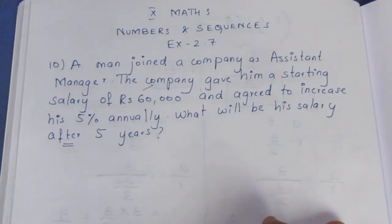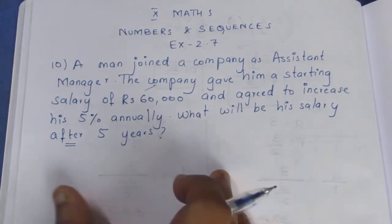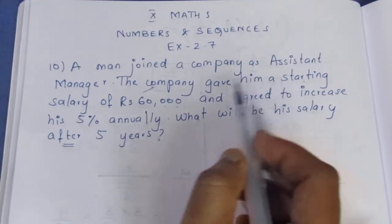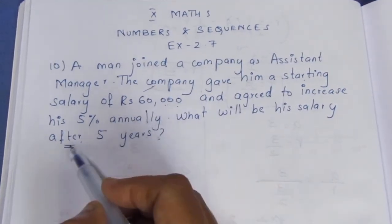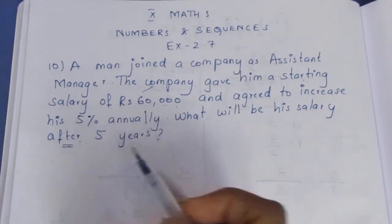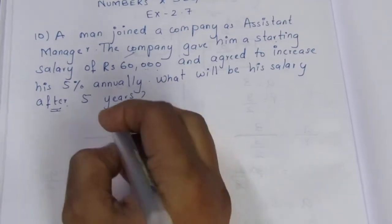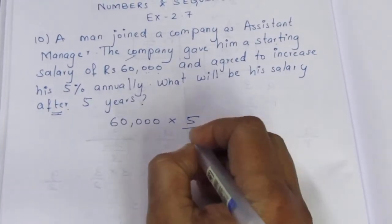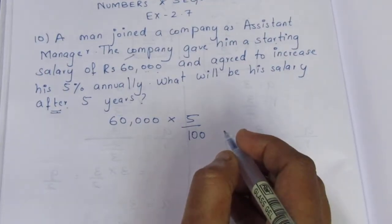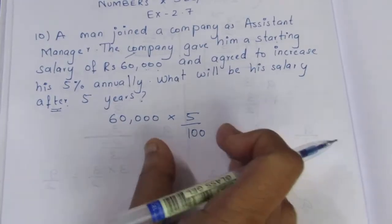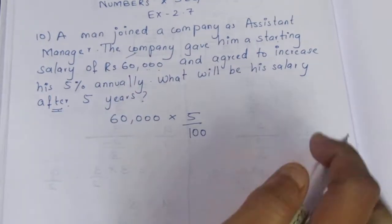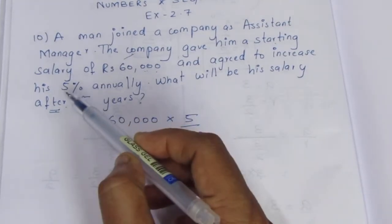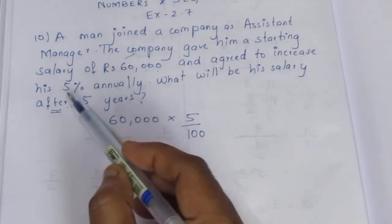The word 'after 5 years' is very important. The first year starting salary is 60,000. After 1 year, we look at the actual amount. If the amount is increased, we will multiply the amount by that percentage.